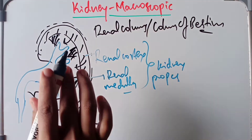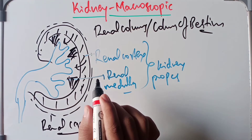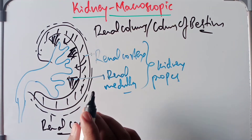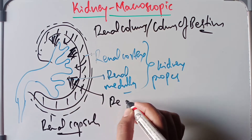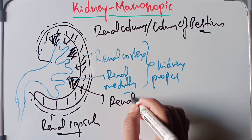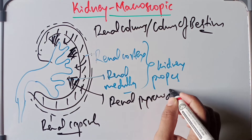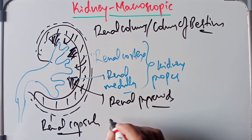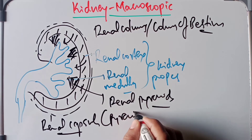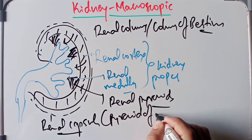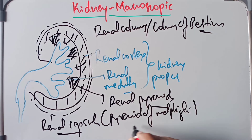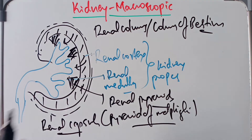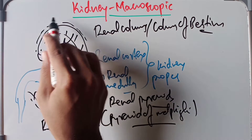The medulla is composed of 5 to 11 dark conical masses called the renal pyramids. These are also called the pyramids of Malpighi.